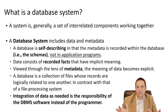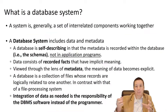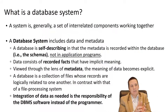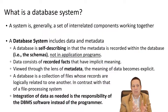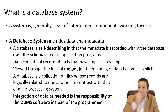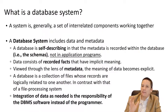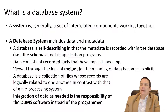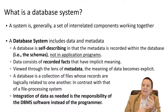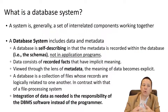Generally speaking, a system is a set of interrelated components. Just like all the different functions or components within Amazon are their own little application but integrate together to create the system that is Amazon — that's kind of what our database system is as well. So it includes our data and our metadata, and the interesting thing about it being self-describing is that the data and the description of the data are both stored in the database.